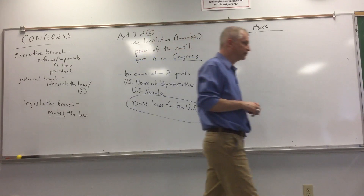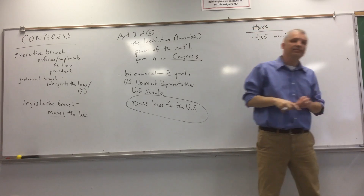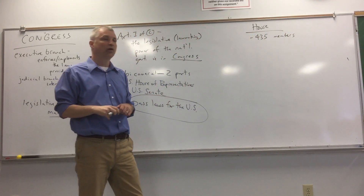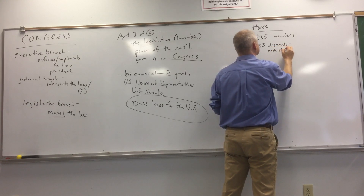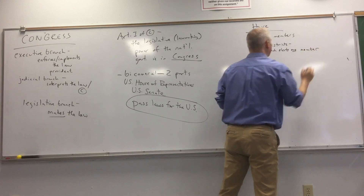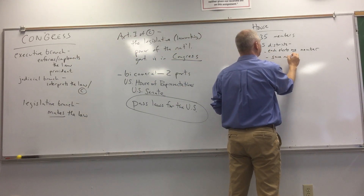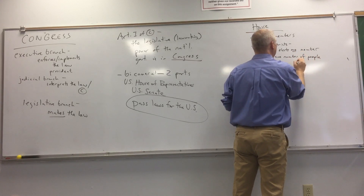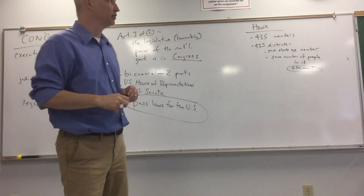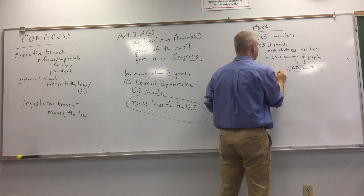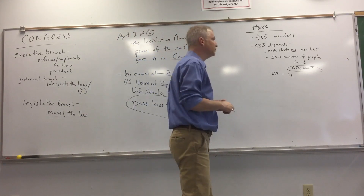The House of Representatives, sometimes just called the House, has 435 members in it. Basically what we do is divide the entire country into 435 districts, and each district elects one member to go to the House. Each district is going to have more or less the same number of people — right now about 650,000 people per district. Virginia has 11 different congressional districts, so Virginia gets to send 11 people to the House.